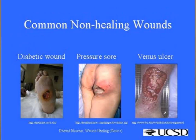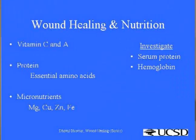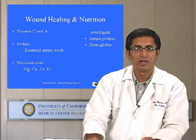Common types of non-healing wounds are diabetic wounds, pressure ulcers, and venous stasis ulcers. Wound healing involves active cellular and molecular processes requiring significant nutrition. Important nutrients recognized for wound healing are vitamins C and A, proteins — especially essential amino acids — and micronutrients like magnesium, copper, zinc, and iron. Clinically, serum protein and hemoglobin levels are investigated as primary nutritional lab values.